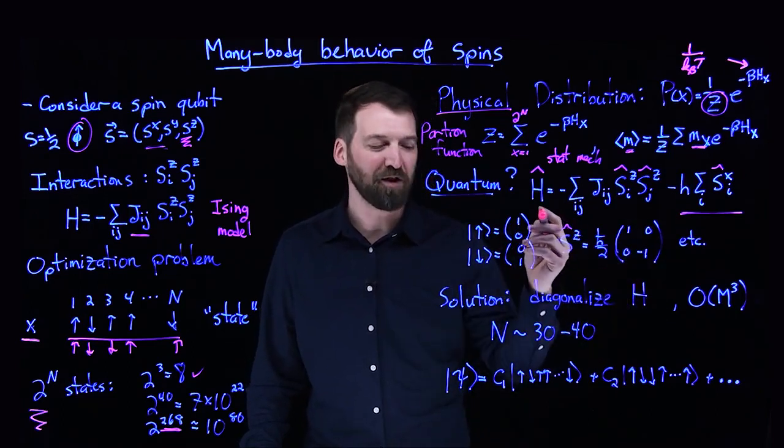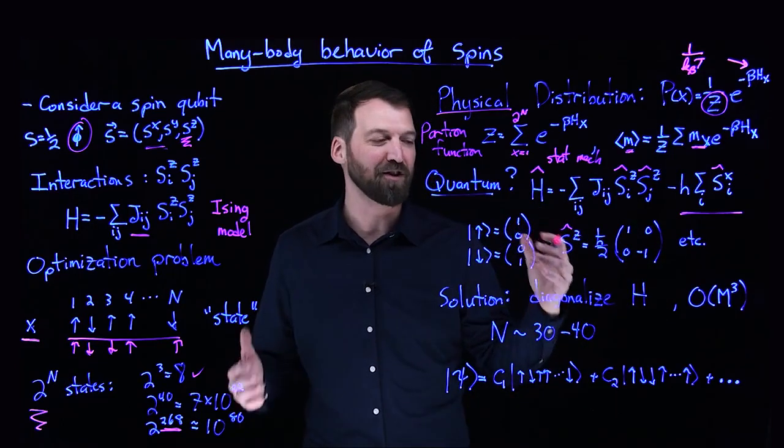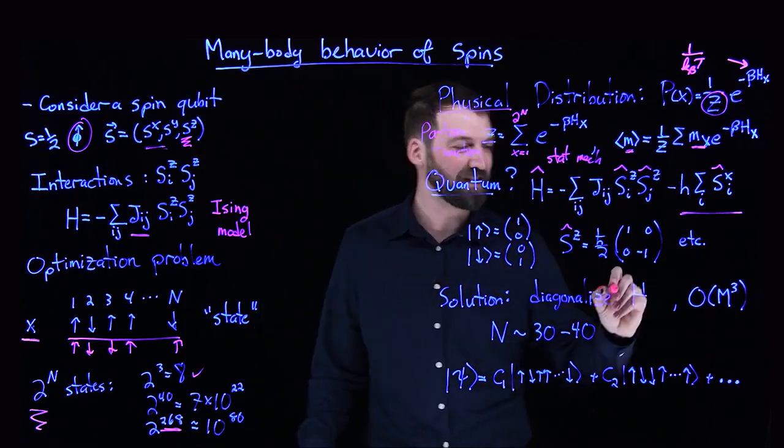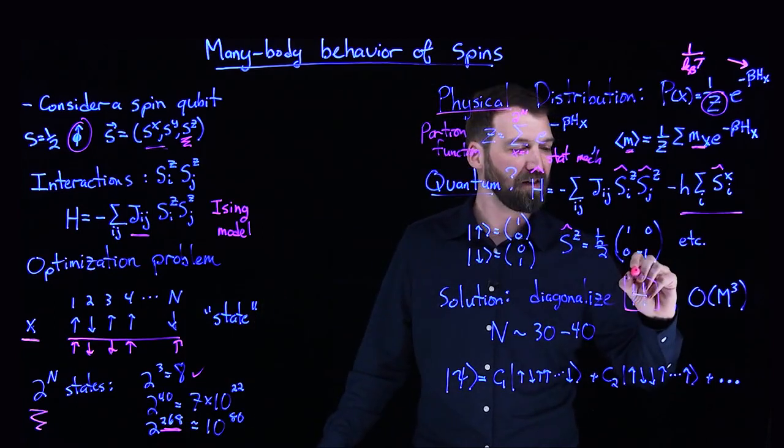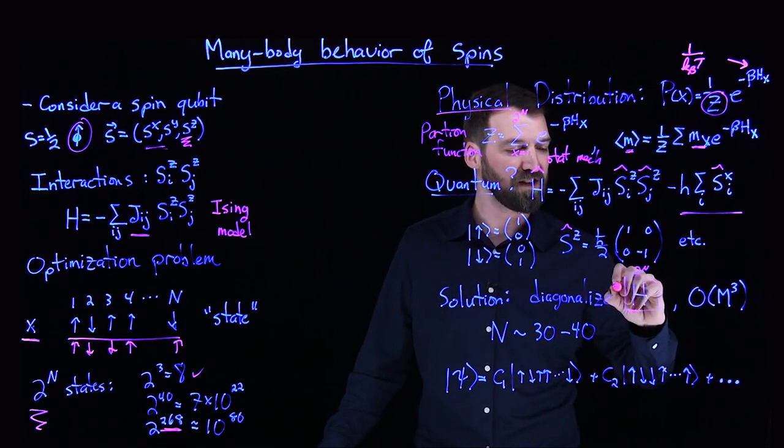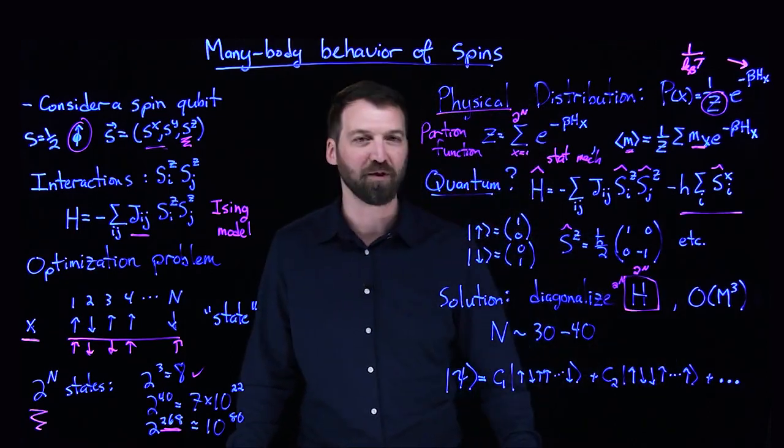An operator like the SZ operator is a matrix. This object, this quantum Hamiltonian, is a very large matrix. It's actually a matrix of 2^n, which is the size of the Hilbert space, times 2^n.